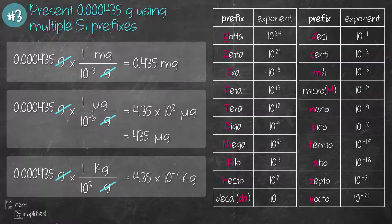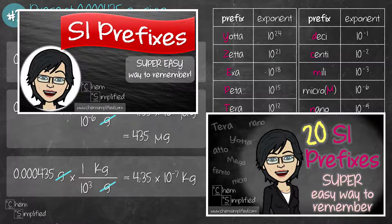You can use this method to convert to any SI prefixes that you want. As long as you know the exponent value for the prefix, you can easily plug it into your setup and convert the given value to any SI prefix. If you're interested in memorizing 20 or 12 SI prefixes, I have videos on that. Do check out the description box for their links.